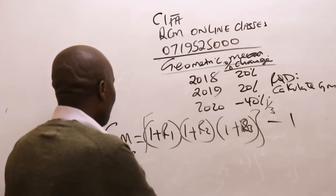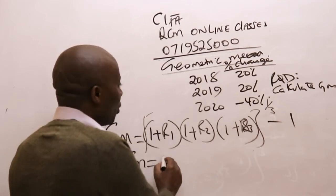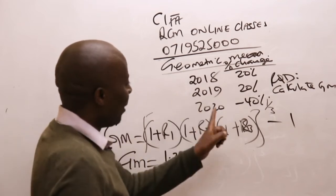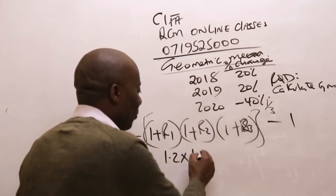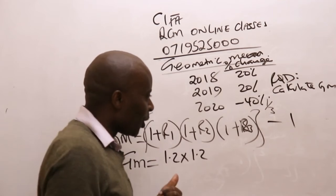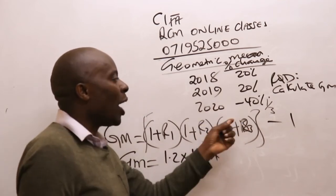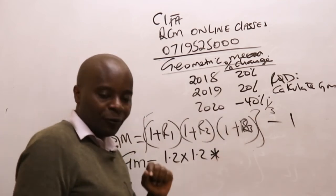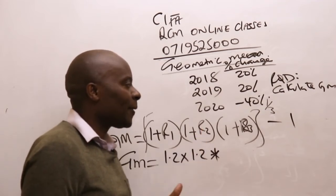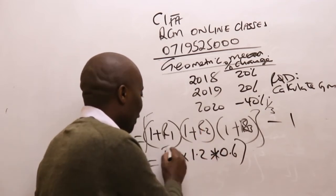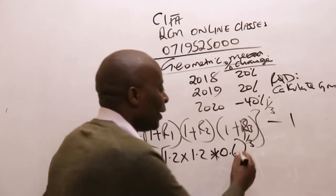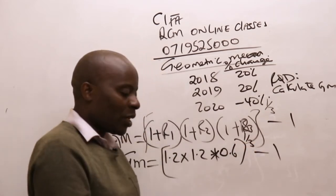So the geometric mean equals: 1 plus 20% gives us 1.2, multiplied by 1.2 again for the second 20%, multiplied by — since we have minus 40%, that is 1 plus minus 0.4, which equals 0.6. Everything is then raised to one third, and at the end I subtract one. That's how we get our geometric mean.